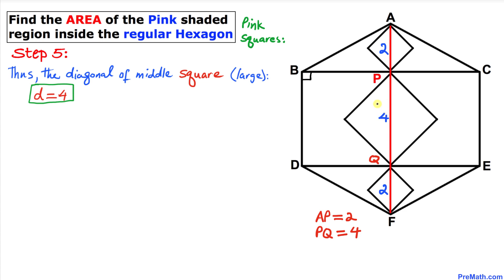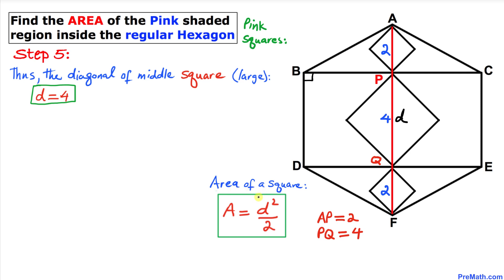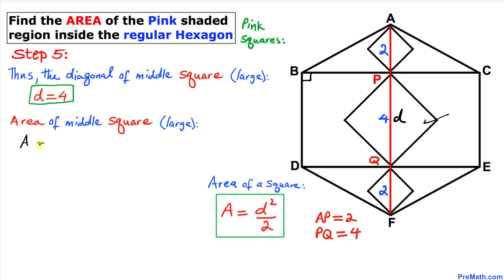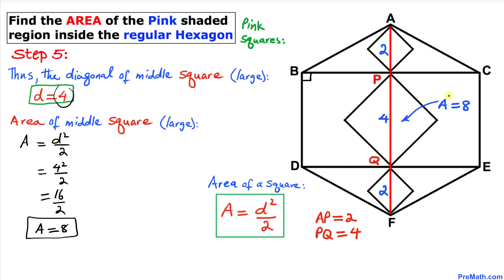Now let's focus on the middle square. Length PQ is the diagonal of this square, so the diagonal D equals 4. Using the area formula for a square: A equals D squared divided by 2. Replacing D with 4: that's 4 squared divided by 2, which is 16 divided by 2. So the area of the middle square is 8 square units.